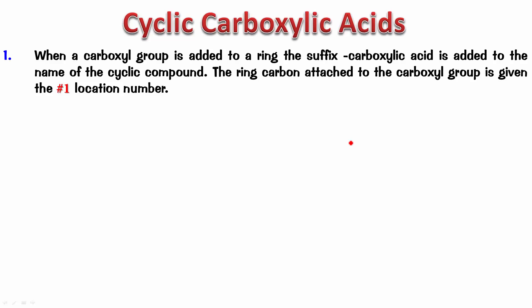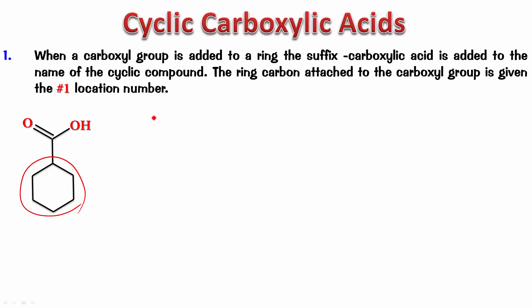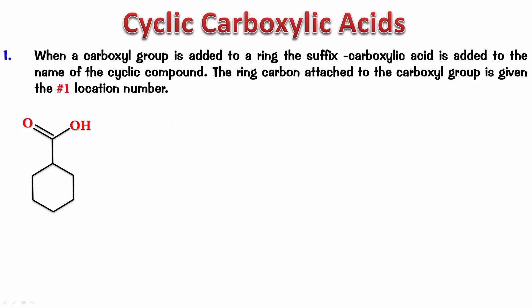The ring carbon attached to the carboxyl group is given the location number 1. For example, a six-membered ring with a COOH directly attached would be cyclohexane, and then carboxylic acid. No need to number because this carbon is automatically number 1. So this is cyclohexanecarboxylic acid.